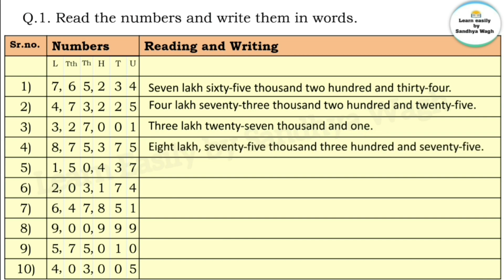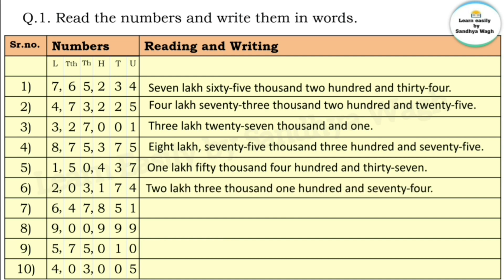8,75,375 — eight lakh seventy five thousand three hundred and seventy five. Then 1,050,437 — ten lakh fifty thousand four hundred and thirty seven. Then 2,03,174 — two lakh three thousand one hundred and seventy four. Next number: 6,47,851 — six lakh forty seven thousand eight hundred and fifty one.